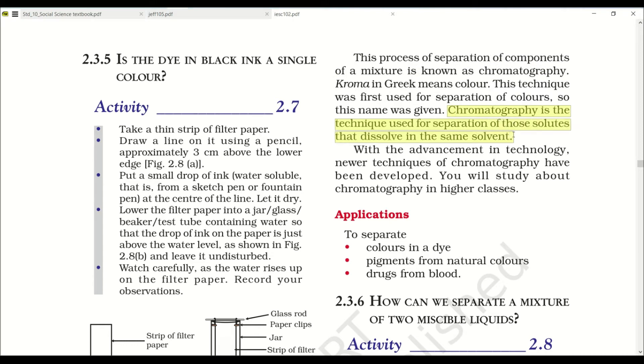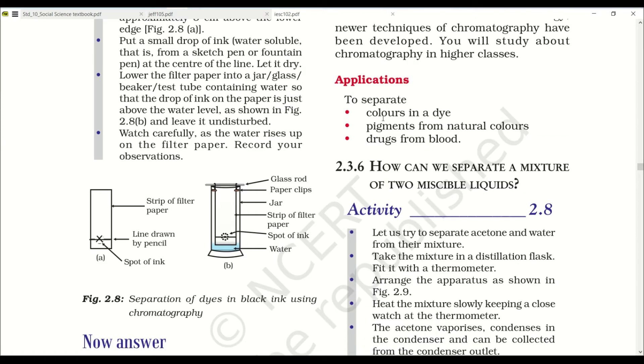Chromatography is a technique used for separation of those solutes that dissolve in the same solvent. So if two or more colors are dissolved in the same solvent like water, it can be separated by chromatography. With advancement in technology, newer techniques of chromatography have been developed. They are used to separate colors in a dye, pigments from natural colors, and drugs from blood.